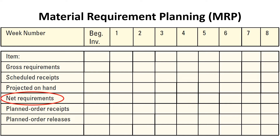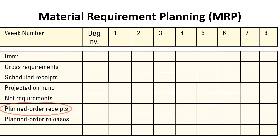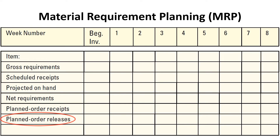The net requirement is the actual amount needed in each time period. The planned order receipt is the quantity expected to be received by the beginning of the period in which it is shown. Here we have two options: lot-for-lot ordering, in which the ordered quantity equals the net requirements, and lot size ordering, in which the ordered quantity may exceed net requirements. Planned order release indicates a planned amount to order in each time period, and equals planned order receipts offset by lead time.